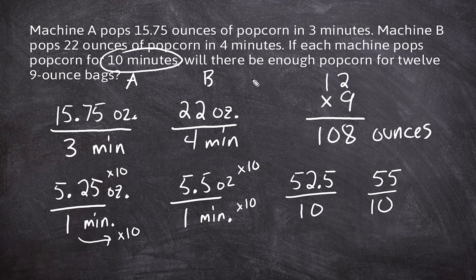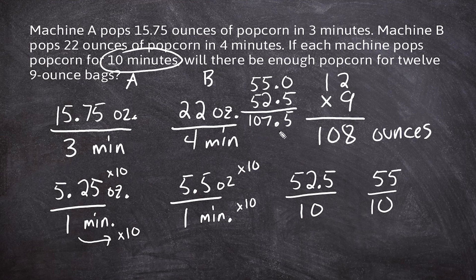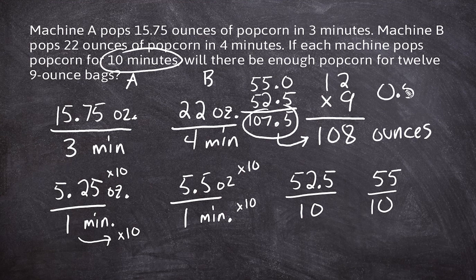Now we combine both quantities: 55 ounces plus 52.5 ounces. We drop the decimal down, and that gives us 107.5 ounces, which is quite close but not quite enough. It is super close to 108 ounces, but technically it is not enough. We are short just 0.5 ounces, because adding another half ounce to 107.5 would give us exactly 108.